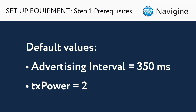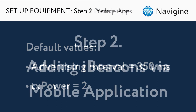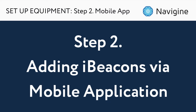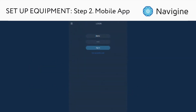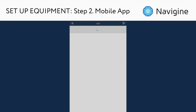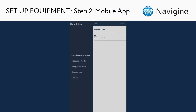You can add iBeacons to your map via the Navigin web portal or through the mobile application. Let's first look at adding beacons via the mobile application. Open the application with your credentials, download the location you need in the location management tab, and then run the measuring mode to add iBeacons to your map.